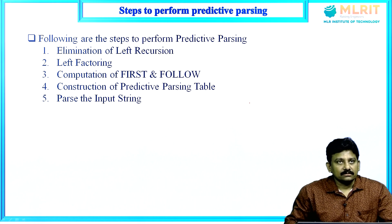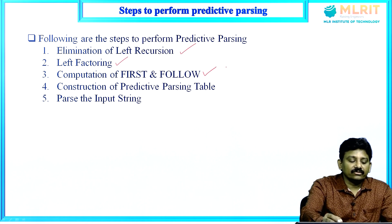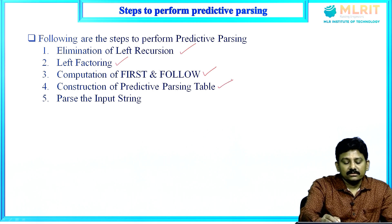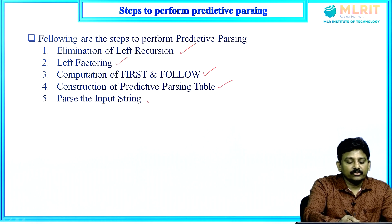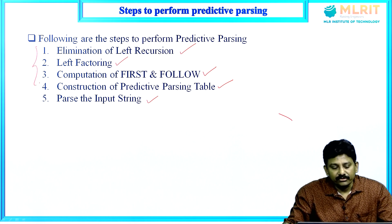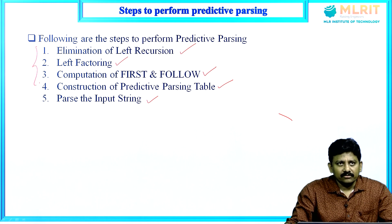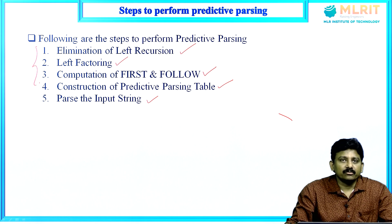The steps to perform predictive parsing are: first, elimination of left recursion; second, left factoring; third, computation of first and follow; fourth, construction of predictive parsing table; fifth, parse the input stream. The first three steps have already been covered in previous videos on left recursion elimination, left factoring, and computation of first and follow.